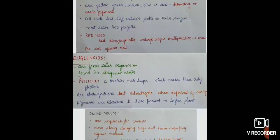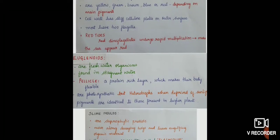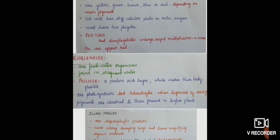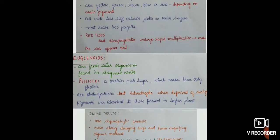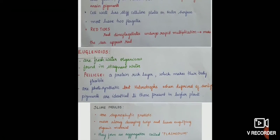Euglenoids are freshwater organisms. They come under Kingdom Protista. They are found in stagnant water. They have a structure called pellicle which is a protein-rich layer. This pellicle makes their body flexible which is one of their characteristics. They are photosynthetic but heterotrophs when deprived of sunlight. Their pigments are identical to those present in higher plants.